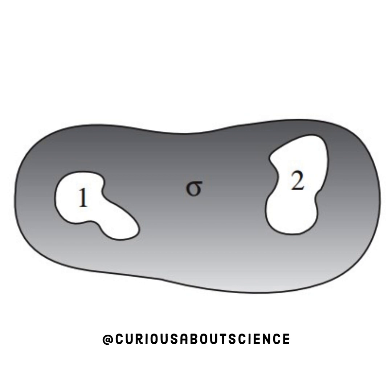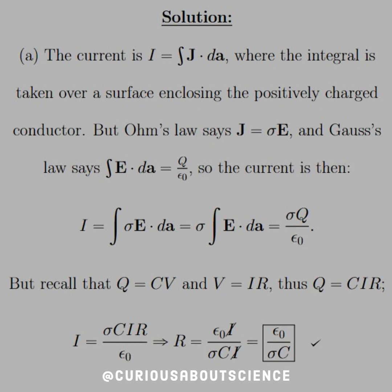All right, so let's draw it out. We have some weakly conducting material sigma, and we see that we have 1 and 2 there. Let's go ahead and see what we can do with this. All right, so for part A,